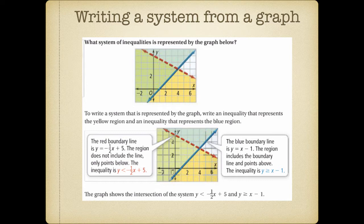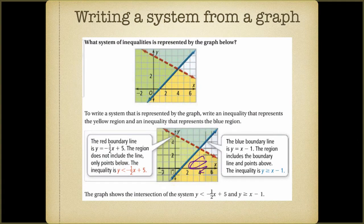To write it, the red boundary line has a slope of negative one-half and crosses the y-axis at five. You'll see there's a light yellow shaded region below the red line. Because the yellow shading is below the red line, we use a less-than symbol. And since the line is dashed, it's just the less-than symbol, with no equal bar.